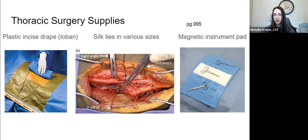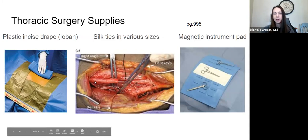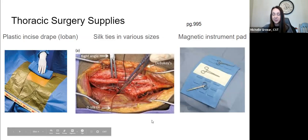You might pass silk ties to them on a DeBakey or right angle or a tonsil. When you get more into vascular surgery, especially thoracic, they might ask for it a different way — they might ask you to hand it on a DeBakey or feed it to them right there. Like in the picture, they might be feeding that tie under that vessel to the surgeon. Just know that it might be a little more involved and you'll need multiple different sizes of silk ties and hemoclips.